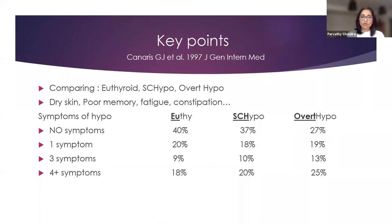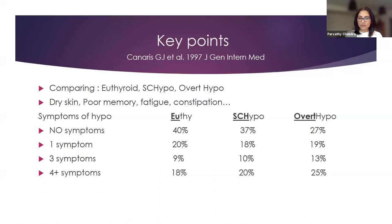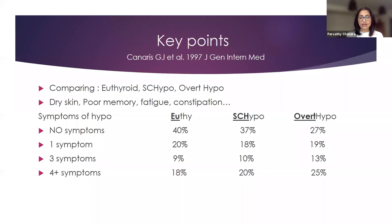The interesting finding is that the overlap between the three conditions is very striking. There is considerable overlap across the board between euthyroid, subclinical, and overt hypothyroidism. But when you go up in the symptom range — three or four symptoms — you can see many more people who are overtly hypothyroid being symptomatic. However, there is still considerable overlap between the three groups, essentially telling you that the symptoms of hypothyroidism are nonspecific and unfortunately do not help predict hypothyroidism.